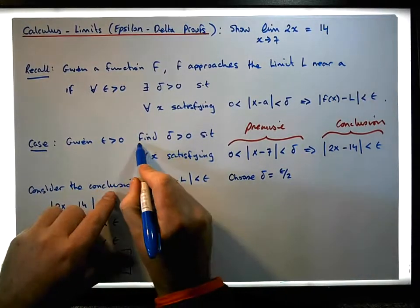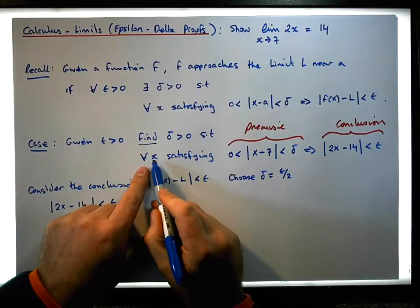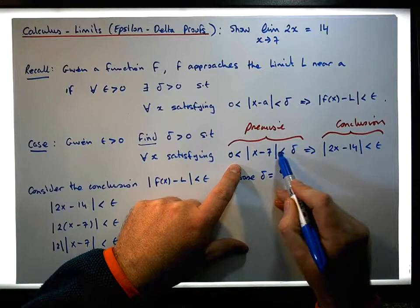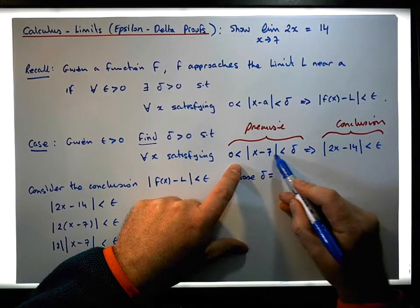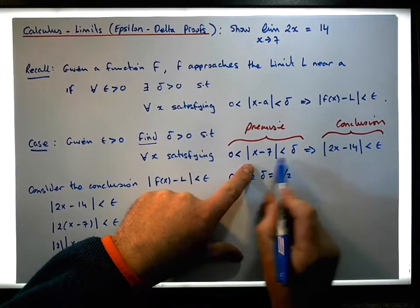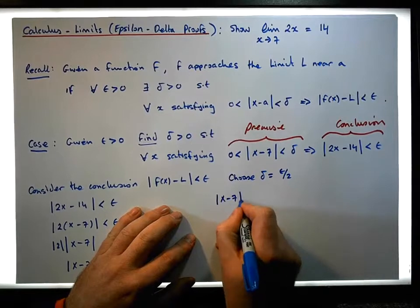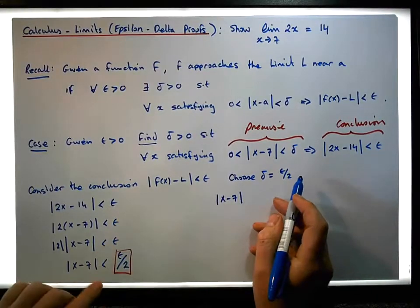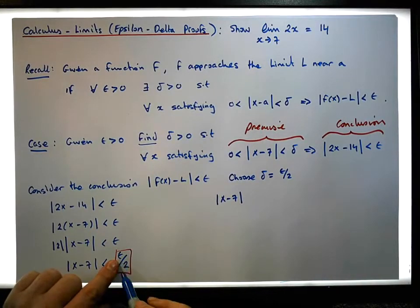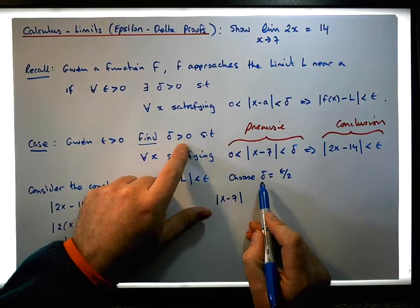So now we've just found what our delta is going to be. Let's find for each and every x that satisfies this condition — can we infer this particular conclusion? Now don't forget, we've chosen epsilon to be greater than zero, so epsilon over two is also going to be greater than zero. So now we know that this delta that we found is also greater than zero. That's important.